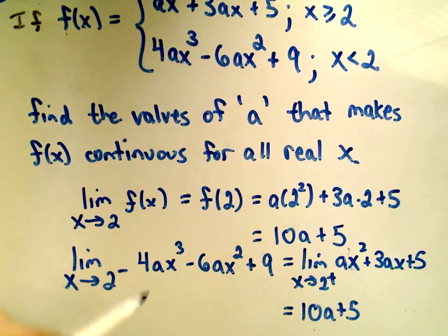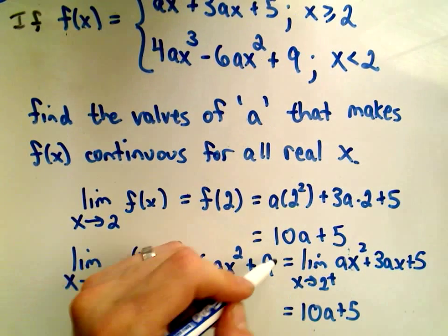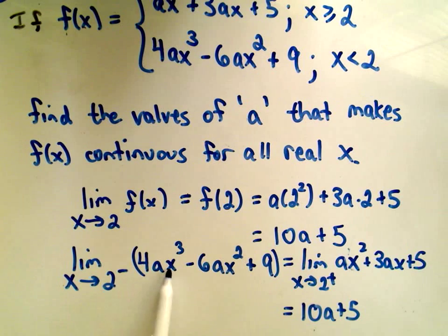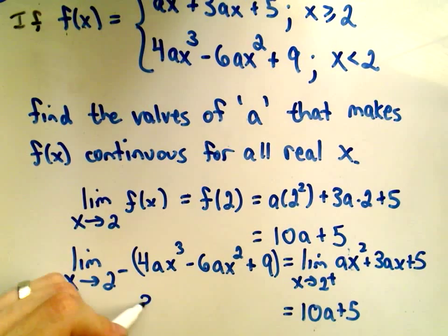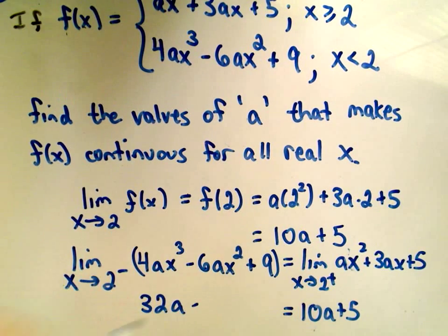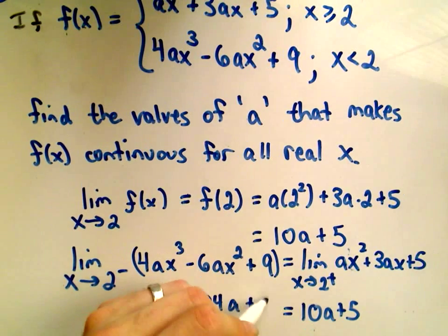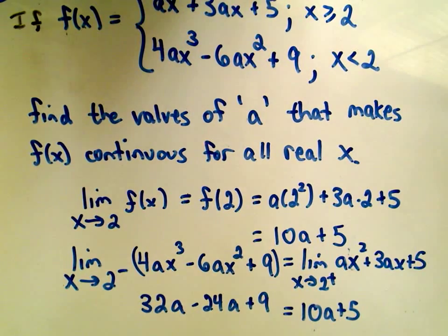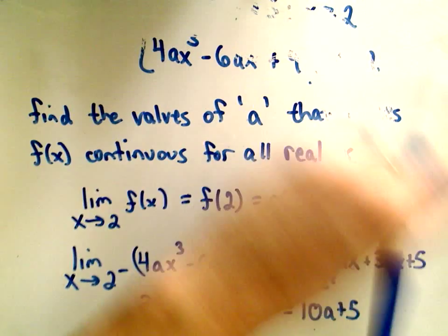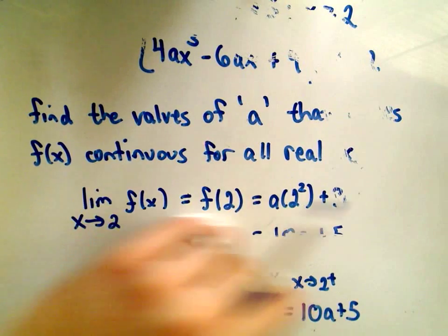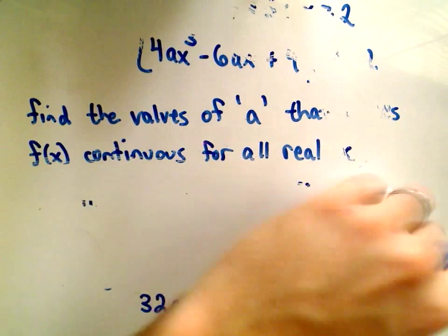Likewise, we can simply plug 2 into our formula here on the left. So we'll get 2 cubed, which is 8, 8 times 4 would be 32a. Minus, if we plug in 2, we'll get 2 squared or 4 times 6, which is 24a. We have our plus 9 hanging out. So now all we have to do is solve this equation for a.